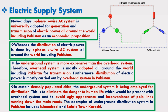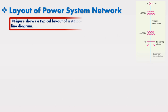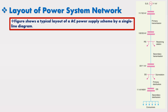Now I am going to discuss the layout of the power system network. Consider the figure which shows the typical layout of an AC power supply scheme by a single line diagram. It mainly consists of generation, primary transmission, secondary transmission, primary distribution, and secondary distribution.